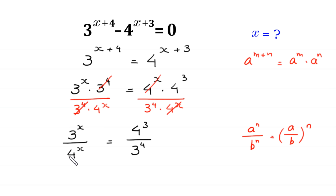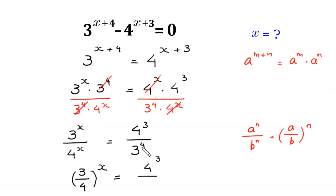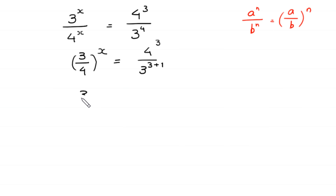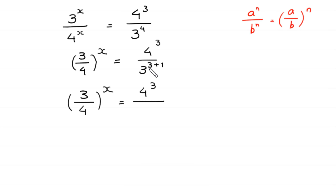This 3 to the power x over 4 to the power x becomes 3 over 4 whole to the power x, equal to 4 to the power 3 divided by 3 to the power 4, which can be written as 3 to the power 3 plus 1.